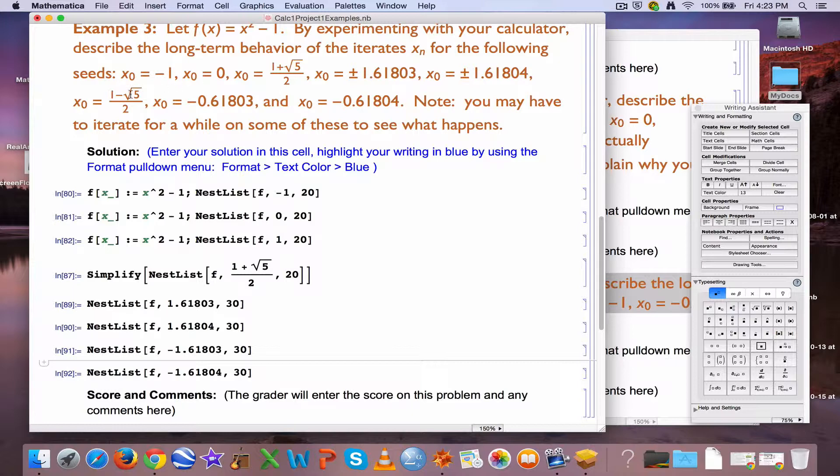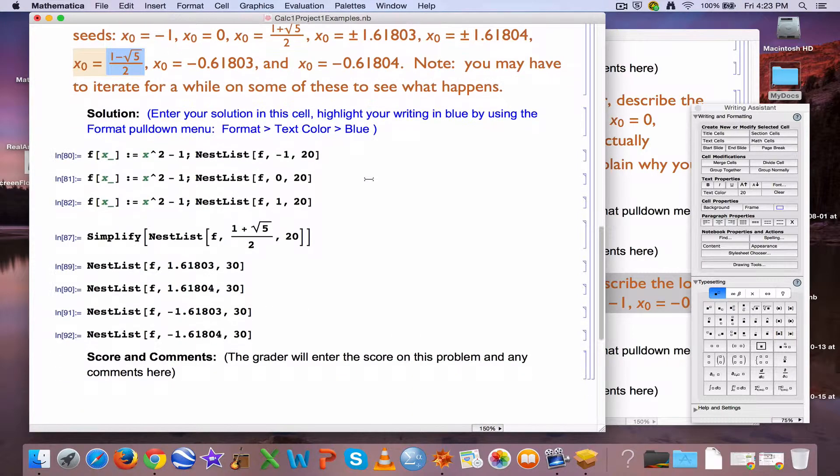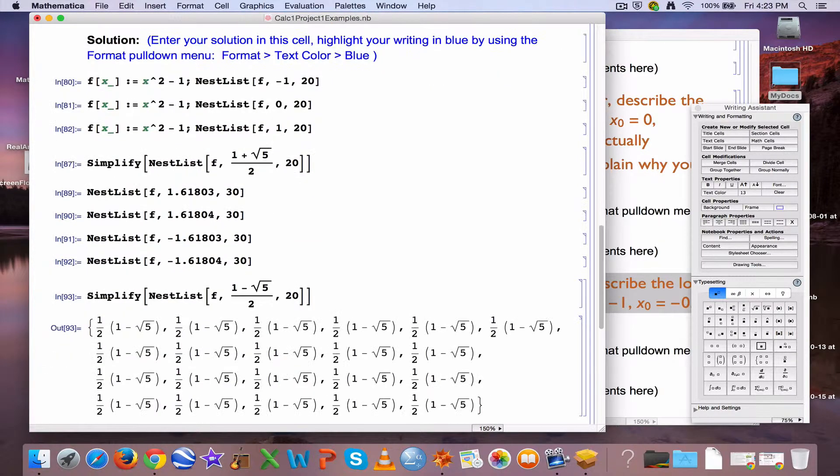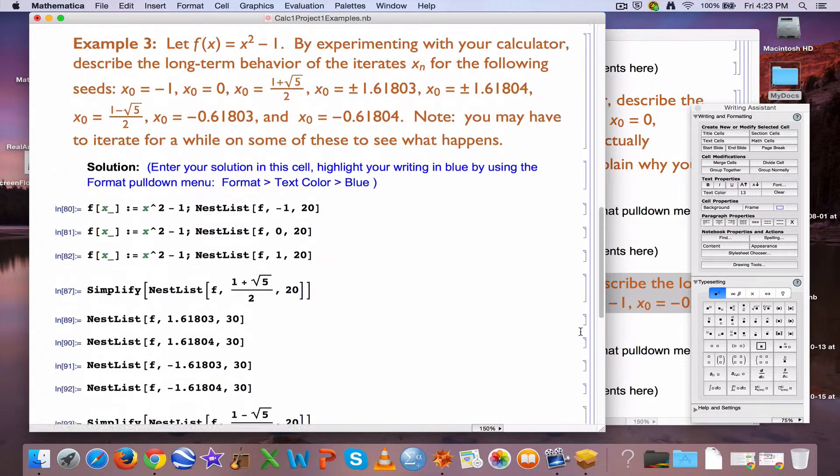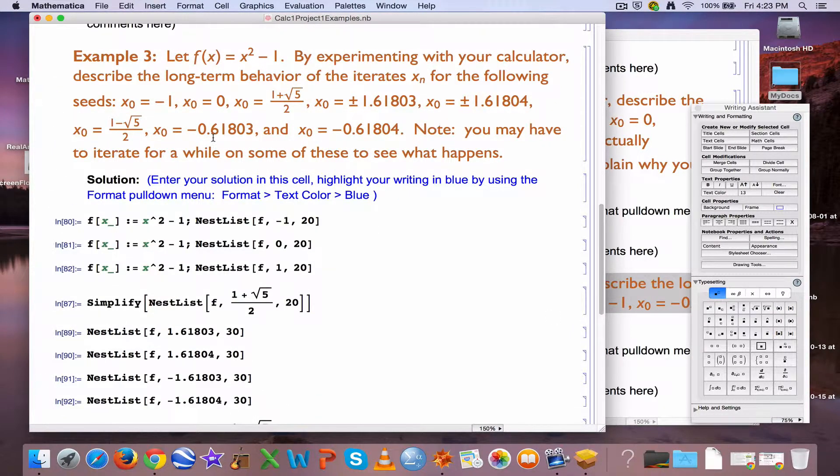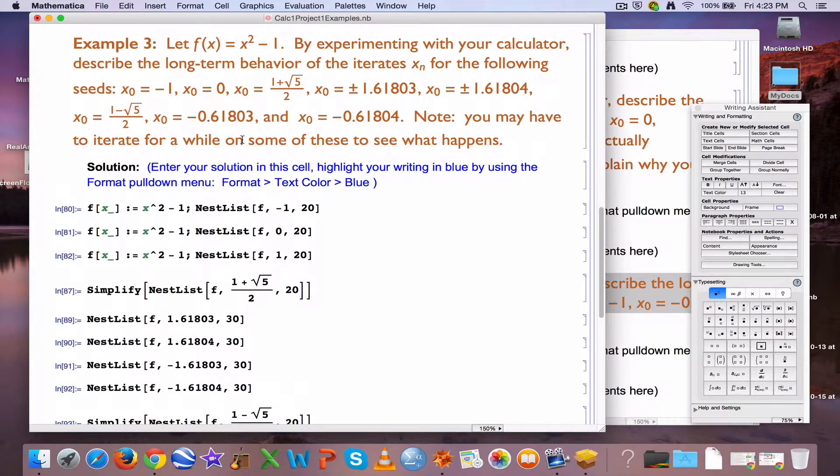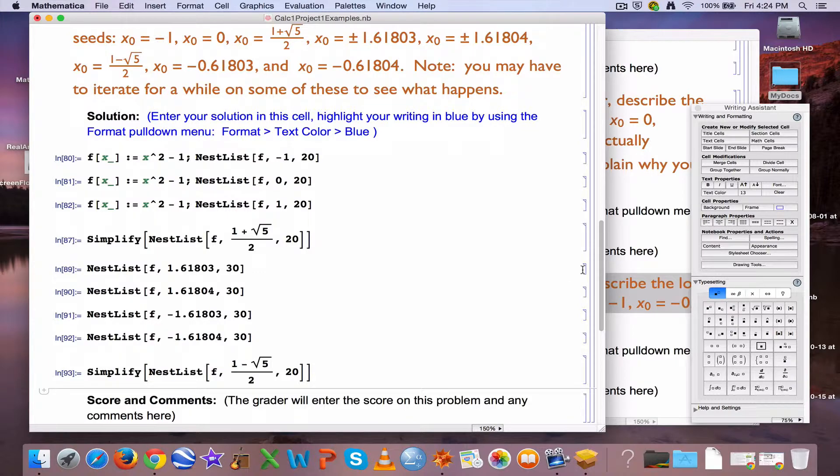And just like the other one, it's getting very, very large. And probably looks like the same numbers, actually. Which should make sense because it's x² - 1. Okay, so different kinds of things are happening. Let's try (1 - √5)/2.